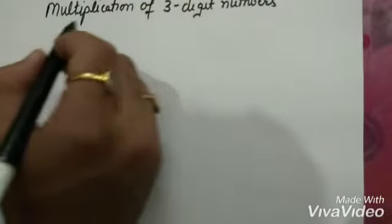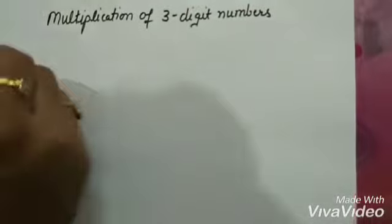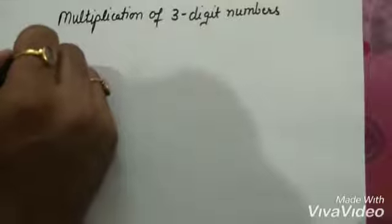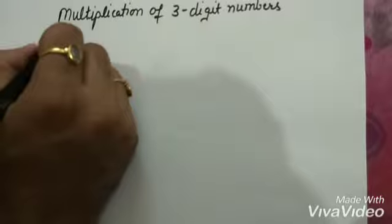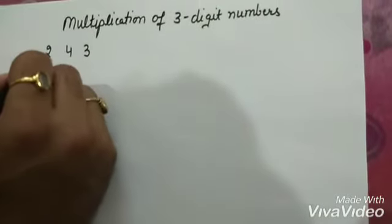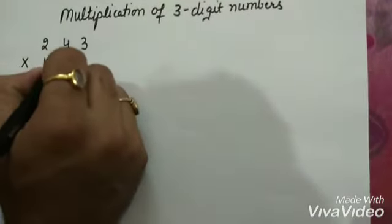Let us learn today multiplication of three-digit numbers. Let us take two three-digit numbers. 243 multiply 124.